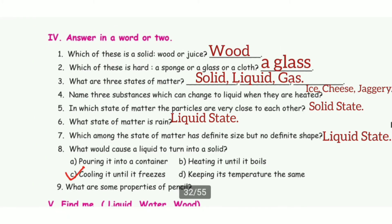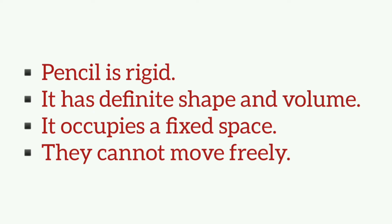8. What would cause a liquid to turn into a solid? The answer is option C — cooling it until it freezes. 9. What are some properties of a pencil? The answer is: a pencil is rigid, it has definite shape and volume, it occupies a fixed space, and particles cannot move freely.